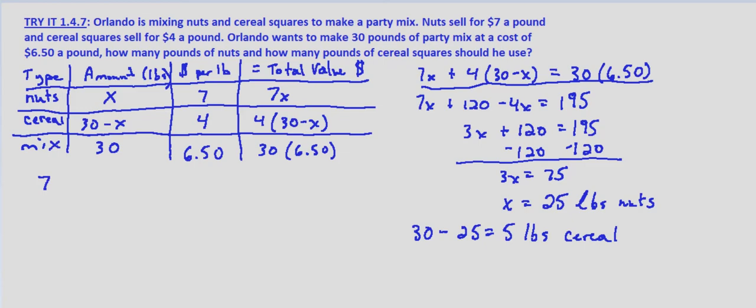but we want to verify that it's 5 pounds of cereal. So 7 times 25 plus 4 times 5, that equals, and this is the check.